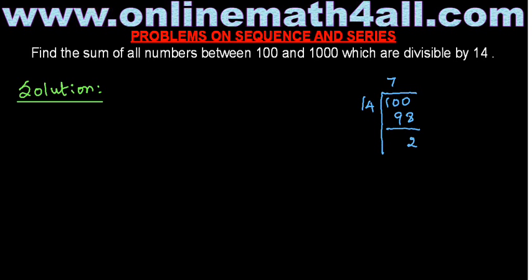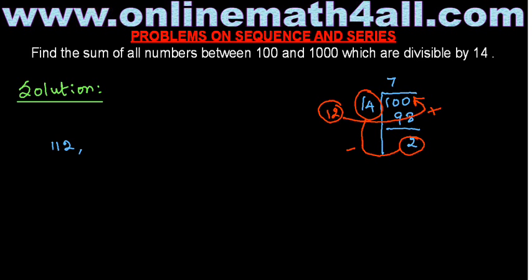I divided 100, I get the quotient 7. The divisor is 14 and the remainder is 2. So from this, how can we get the first number between 100 and 1000 which is divisible by 14? We have to subtract the remainder 2 from the divisor 14. When you subtract 2 from 14, we get 12. Then we have to add this 12 to 100, and we get 112. So 112 is the first number which is divisible by 14 between 100 and 1000.